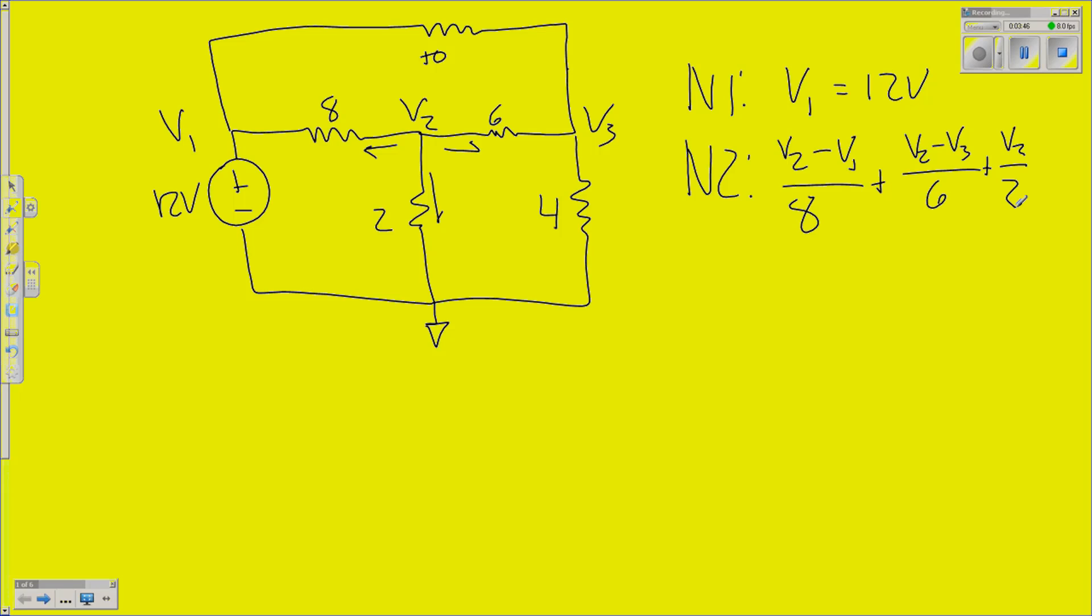Technically, it would be V2 minus 0. In this case, it's just ground. We can drop that 0. Always remember, it has to equal 0. The sum of those has to equal 0. That's just our Kirchhoff current law.